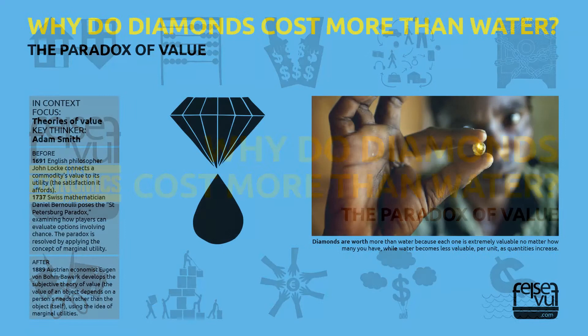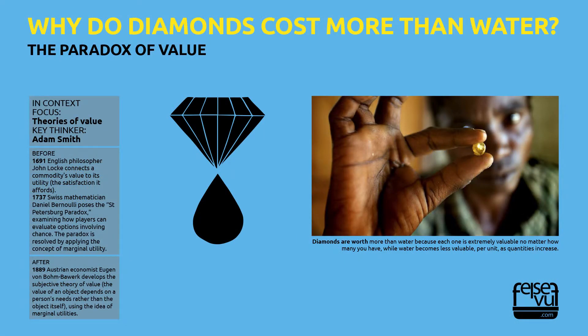In 1769, Anne Robert Jacques Turgot noted that despite its necessity, water is not seen as a precious thing in a well-watered country. Seven years later, Adam Smith took this idea further, noting that although nothing is more useful than water, hardly anything can be exchanged for it. Although a diamond has very little value in terms of use, a very great quantity of other goods may frequently be had in exchange for it. In other words, there is an apparent contradiction between the prices of certain commodities and their importance to people.